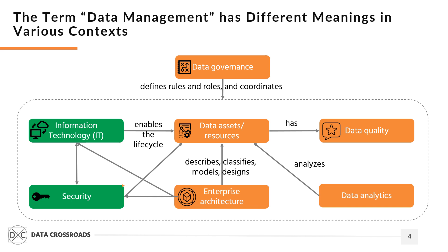These are capabilities that many companies recognize as core data management capabilities. The question regarding the relationship between data management and IT is disputable. Some companies consider data management as a part of information technology capability. Others place a data management function under finance accountability. In my opinion, data management should be an independent business function. Every business unit within the company deals with data; therefore, a data management function should coordinate the activities of all data stakeholders. Data governance in this respect manages data management capabilities and coordinates activities with other business capabilities.